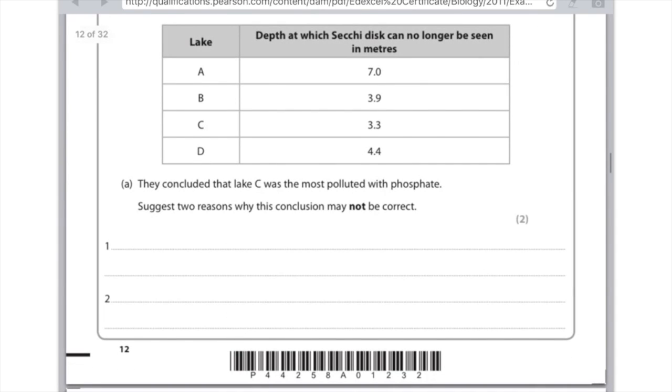The depth at which we can see the Secchi disc is the least, telling us it's the most polluted, but there's no way we know it's definitely phosphate. First, write that it might be another pollutant such as nitrates. For the second point, use anything sensible. You could say there could be issues with reliability as they only did it once, or they may have used a different size disc, or different light conditions. If they chose near nighttime, there's no way they would have seen the disc.